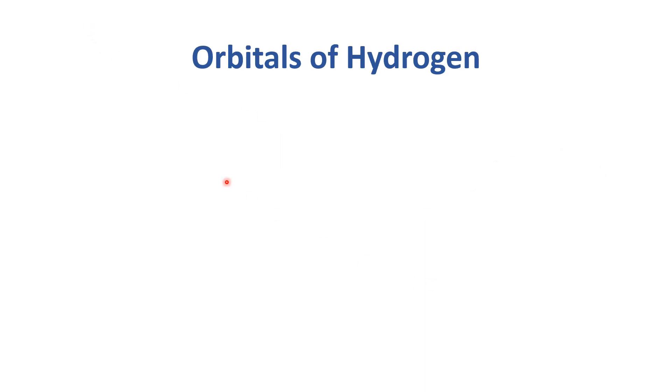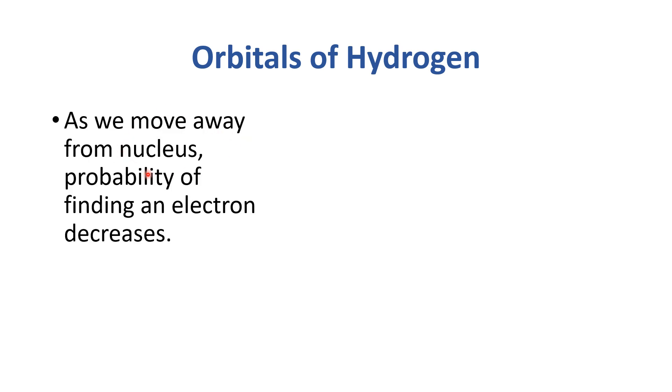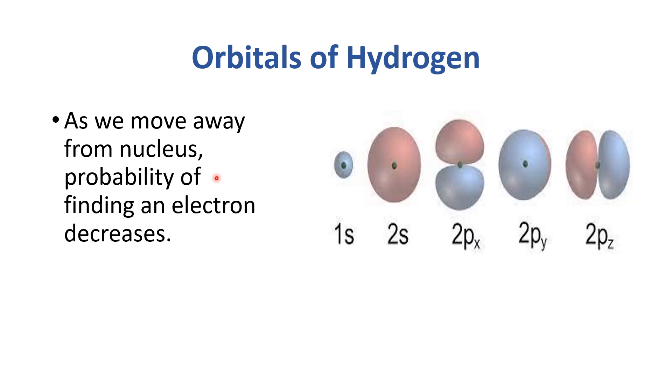Let's see example orbitals of hydrogen. As we move away from nucleus, probability of finding an electron decreases. Jis se jis se hum nucleus se door zyada jate hain, jo probability hoti hai electron ko find karne ki woh kam hoti jati hai.